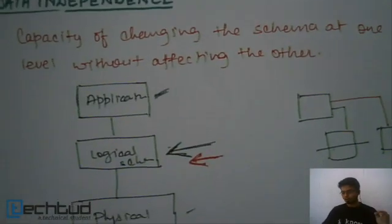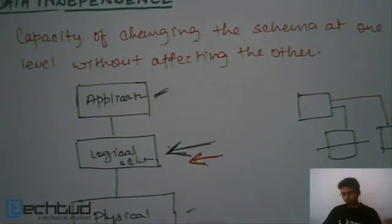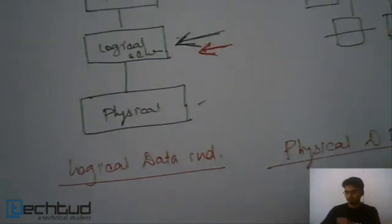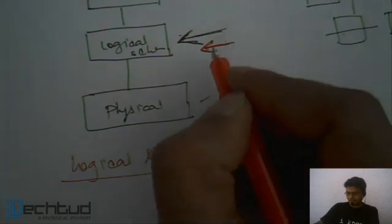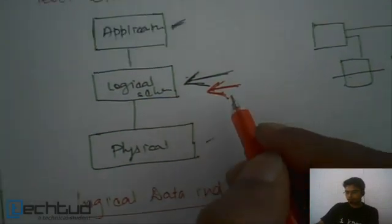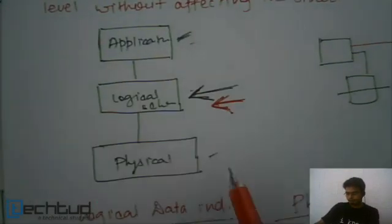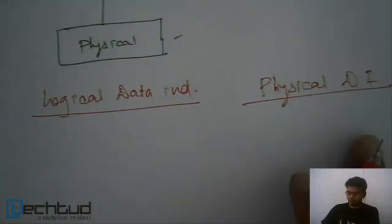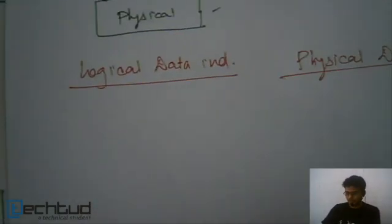Let's define data independence. The definition is: the capacity of changing the schema at one level without affecting the other level. As we discussed, if we want to change the logical schema, we need not affect the application level or the physical schema — that is, how the data has been stored.